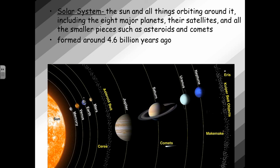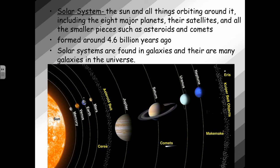Our solar system formed around 4.6 billion years ago. Solar systems are found in galaxies, and there are many galaxies found in the universe.